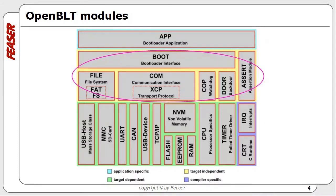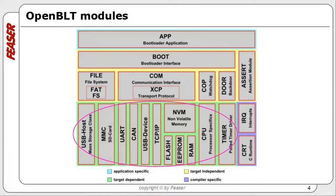The target independent part contains all the code independent of the microcontroller — for example, the communication protocol used during a firmware update. The target dependent part implements all the microcontroller specifics, such as the flash driver and the communication transport layers. The compiler specifics typically consist of the C startup code and interrupt handling.